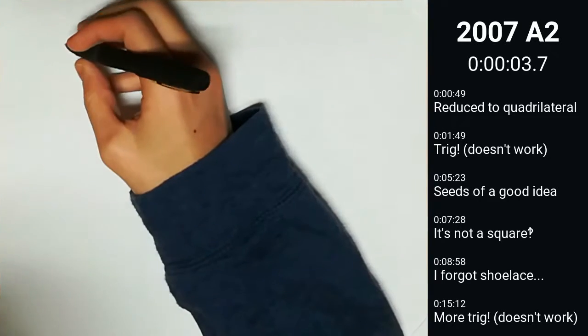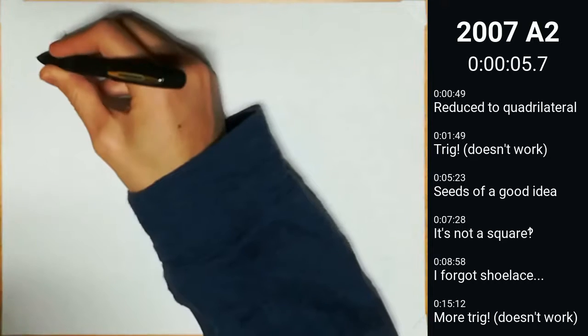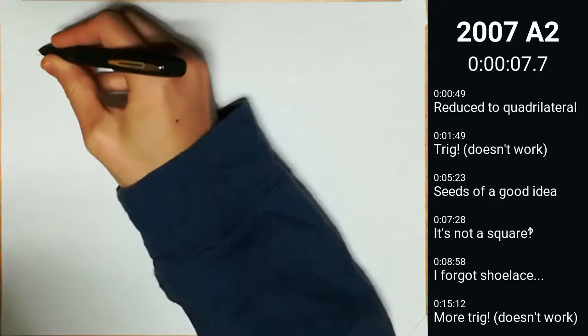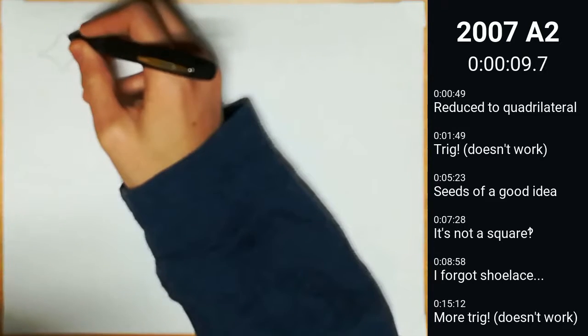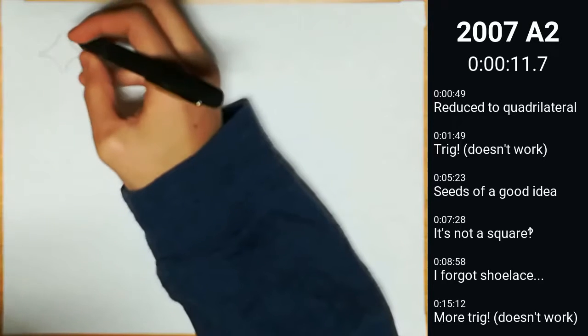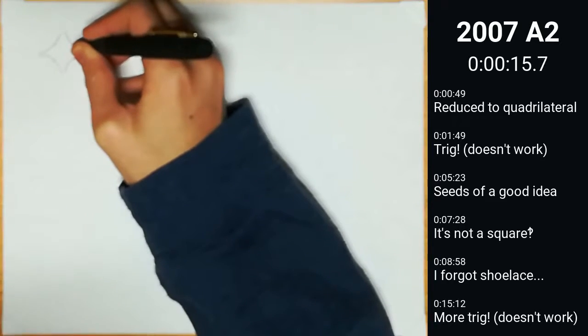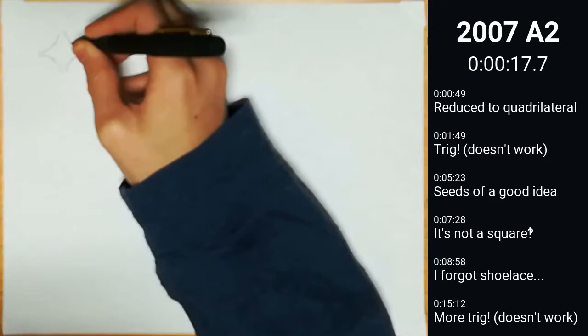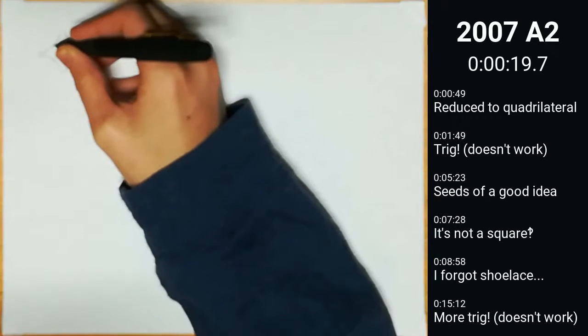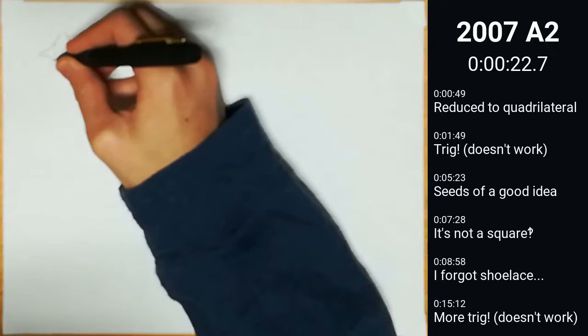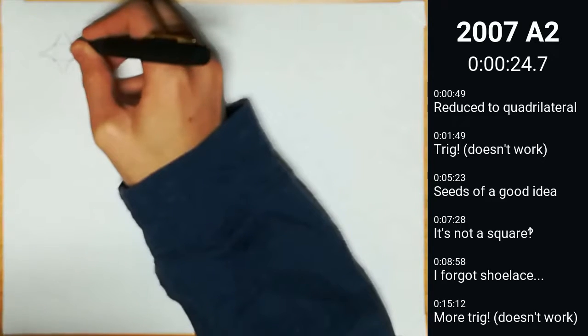So we want the set to intersect both branches of the hyperbola xy equals 1 and the hyperbola xy equals negative 1. Now, the set has to be convex. There has to be at least one point on each branch of the parabola—this is the definition of intersect—and it has to be convex.